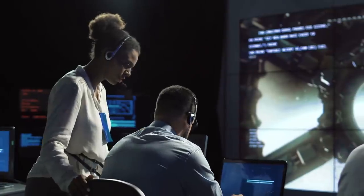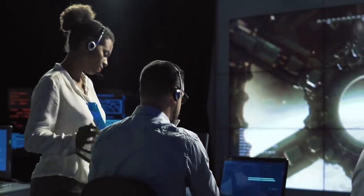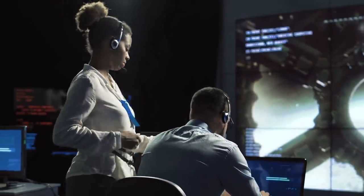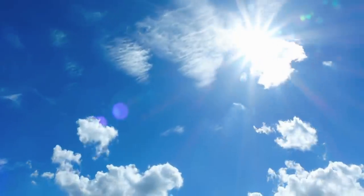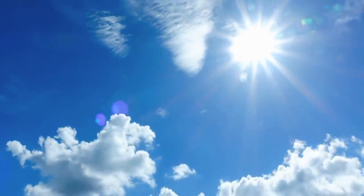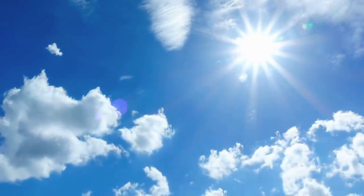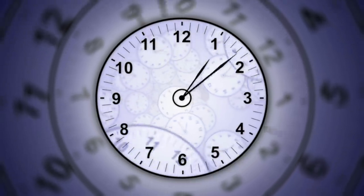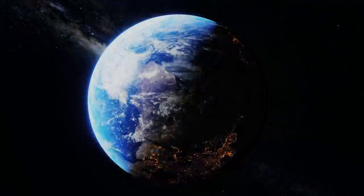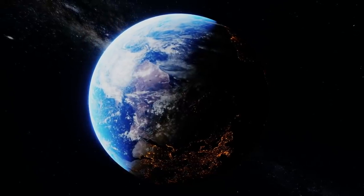However, experts consider it unlikely that life will still exist on Earth by that time. As a result of various processes, the Sun's radiant power will continue to decrease over the coming millions of years. Probably in 500 million years, the solar radiation will be so small that no more life on Earth will be possible.